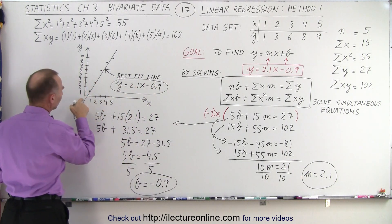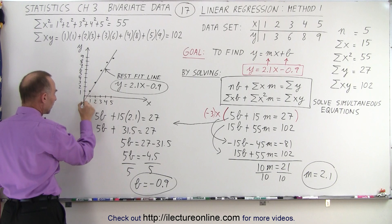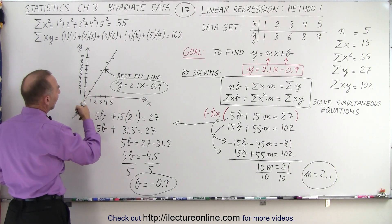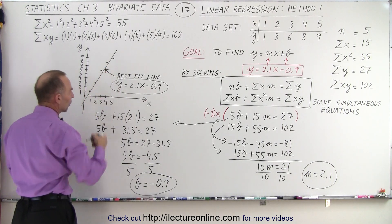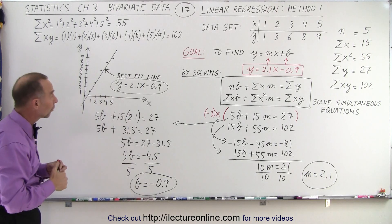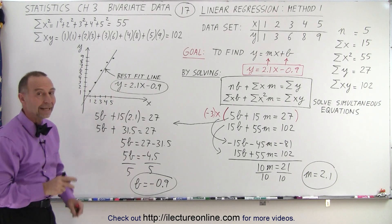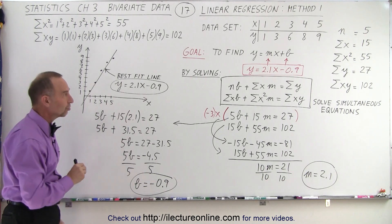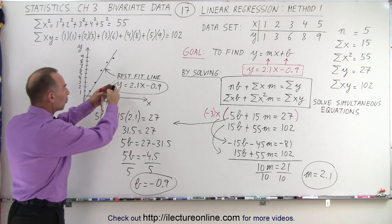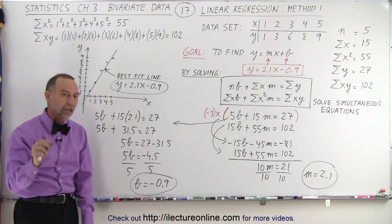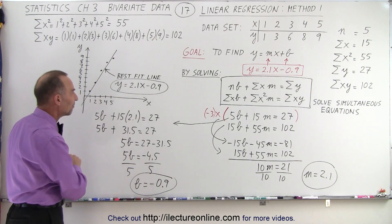Now notice that, yes, it looks like it's crossing the y-axis at about minus 0.9, and the slope looks like it's a little bit more than 2 to 1 or 2.1 to 1. So that's how we find the best fit line. That's what's called linear regression, to find that line so we have a numerical way to express the relationship between the x and the y value.